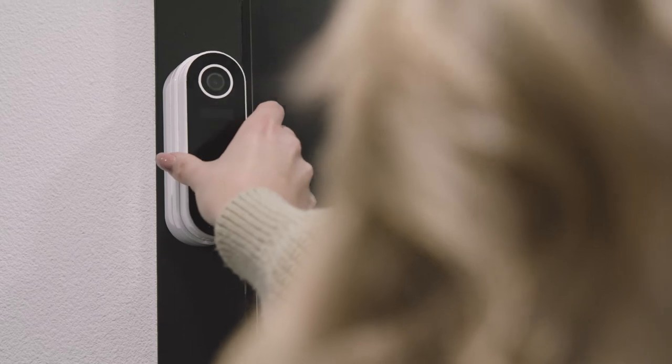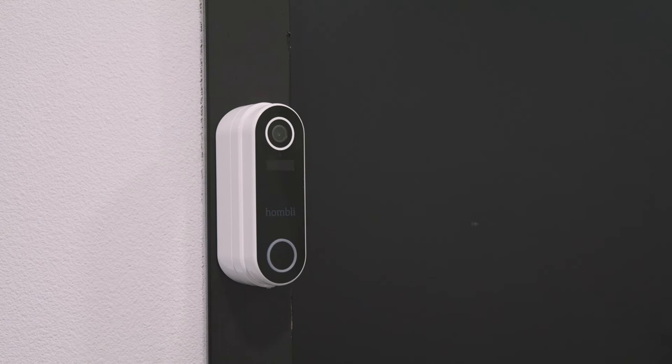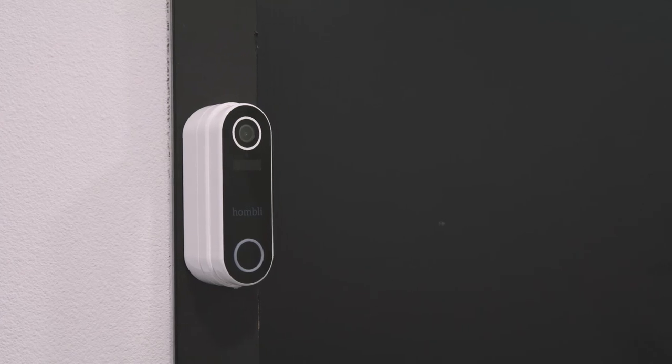Place the doorbell in the bracket. Tighten the security screw. Now your Smart Doorbell 2 is ready for use.